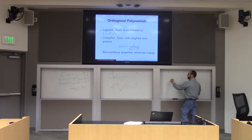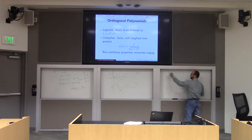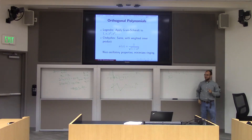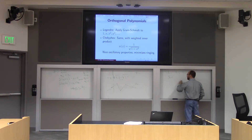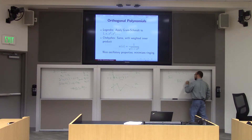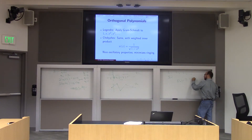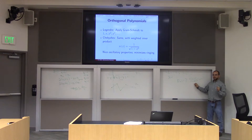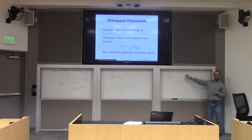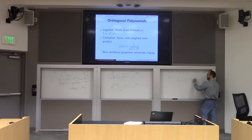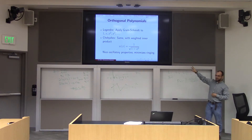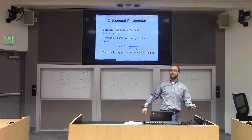Why would you want orthogonal polynomials? The least-squares projection of f of x — call it f-tilde of x — is just the inner product of f and L1 over the inner product of L1 and L1, times L1 of x. This is just the orthogonal projection formula we've already seen in this class, applied to orthonormal polynomials. The nice thing is that these inner products are hiding an integral, and if you approximate that integral you're approximating a least-squares fit in an orthonormal basis. The monomials are not orthonormal, so that formula no longer applies and you have to do something more complicated.